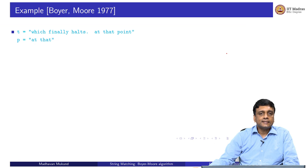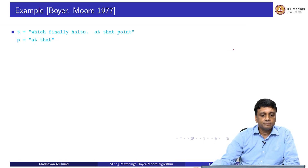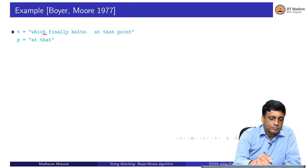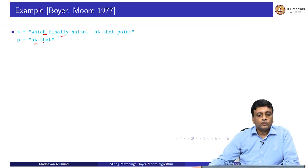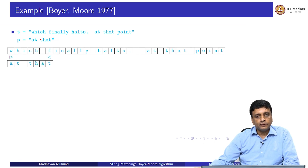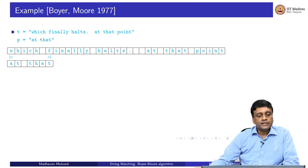Before we formalize this as an algorithm, let us do a more detailed example from the original paper by Boyer and Moore where they introduced these two skipping rules. The text is 'which finally halts. ' with two spaces, and the pattern we are searching for is 'at that'. We start at the beginning, doing a brute force scan with this optimization. Since 'at that' has seven letters, we look at the first seven letters of the text and start scanning from right to left, getting a mismatch.